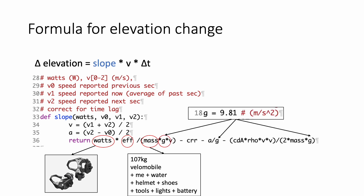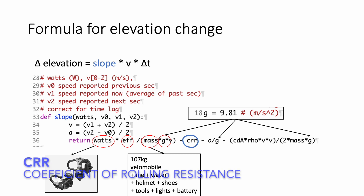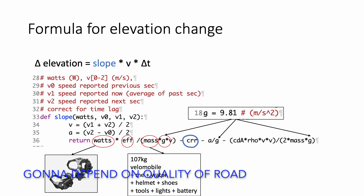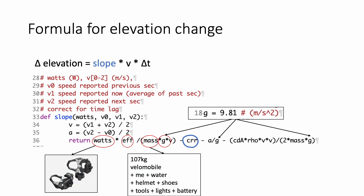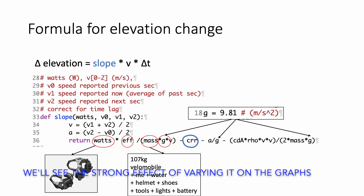We will also need G, the gravitational constant, which appears three times in this formula — we take the nominal value of 9.81 meters per second squared. Another very important thing to estimate is the coefficient of rolling resistance. I don't have a precise figure, but we have ballpark values from road bike tests to plug in as a tentative value, and we can vary this to see what effect it has.